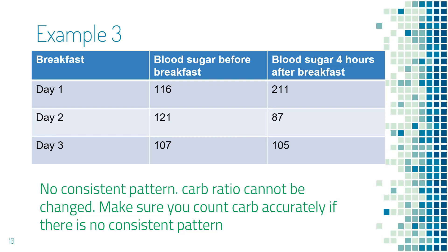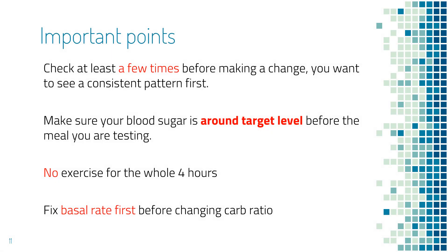When you are not able to find any consistent pattern, make sure your estimation of carbs is accurate — if you sometimes overestimate and sometimes underestimate carbohydrates, you will not see a consistent pattern. A few important points: first, check a few days and see a consistent trend before making a change to carb ratio. Second, only test carb ratio when blood sugar before the meal is around target level, roughly 100 to 130 for most people. Third, no exercise during the whole four-hour period.